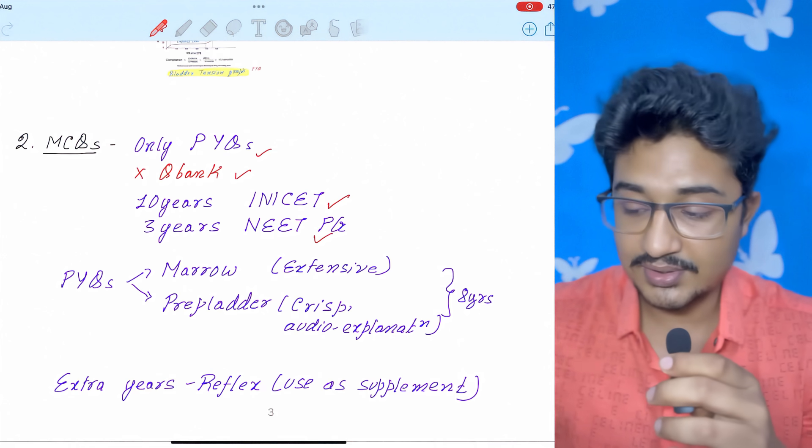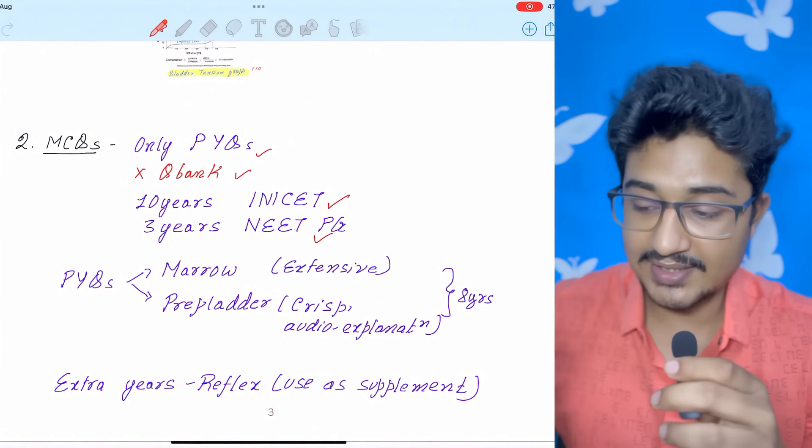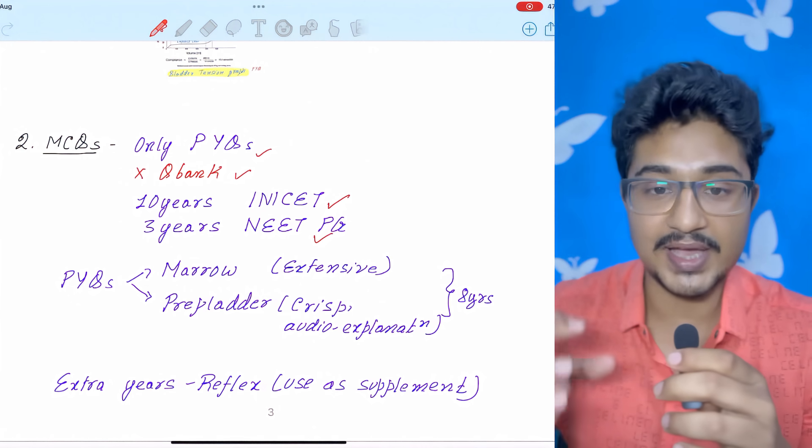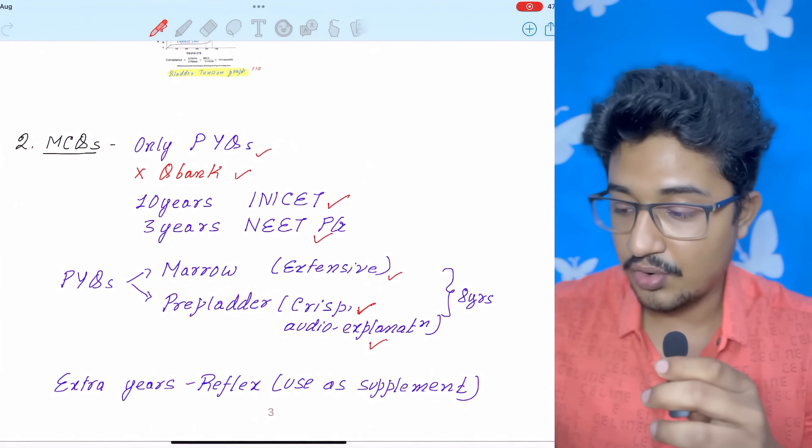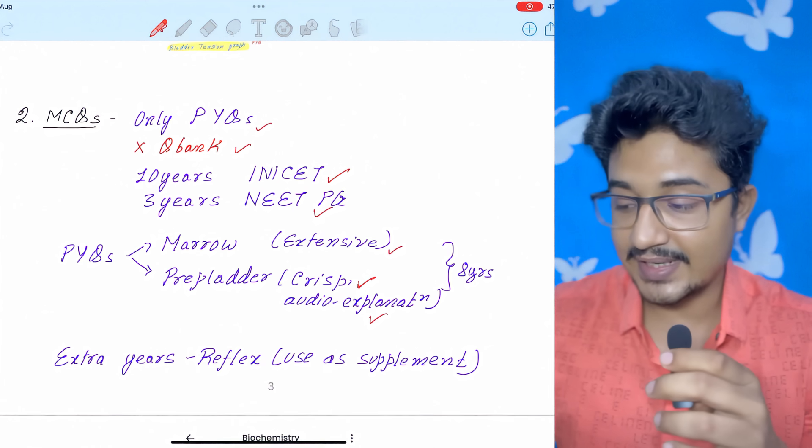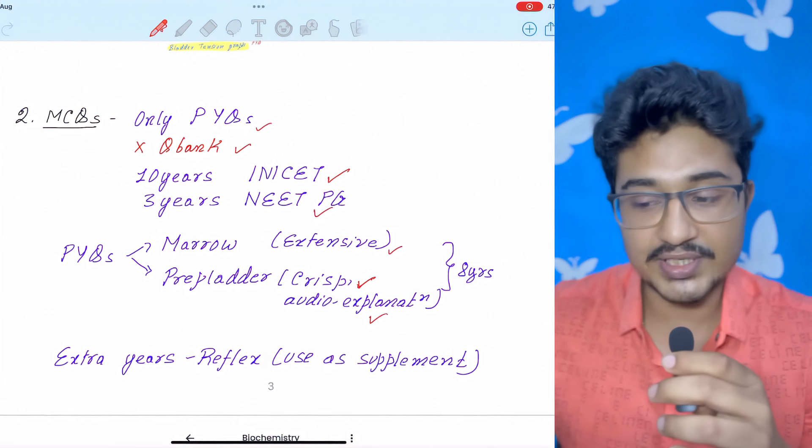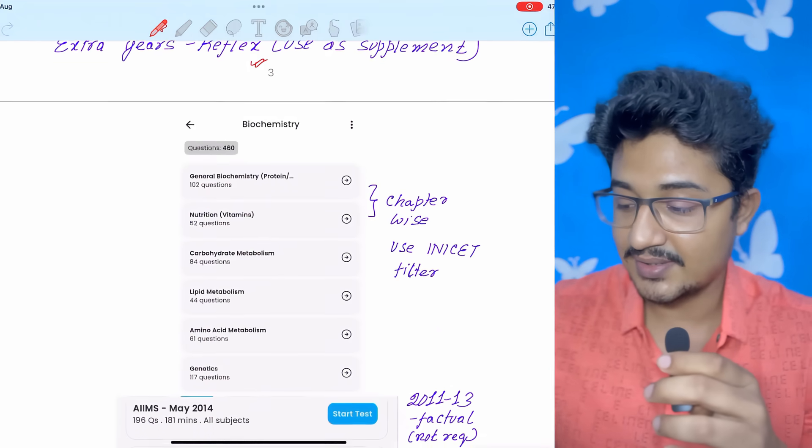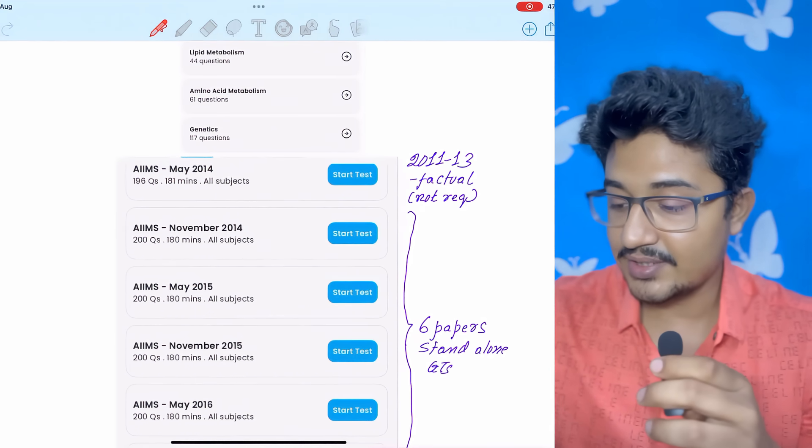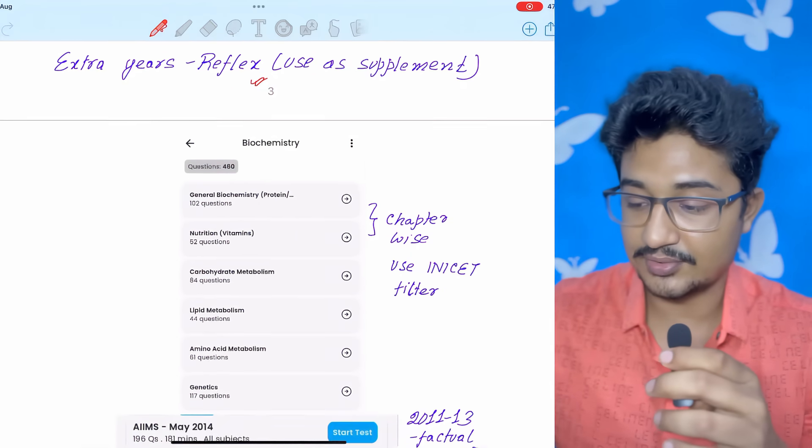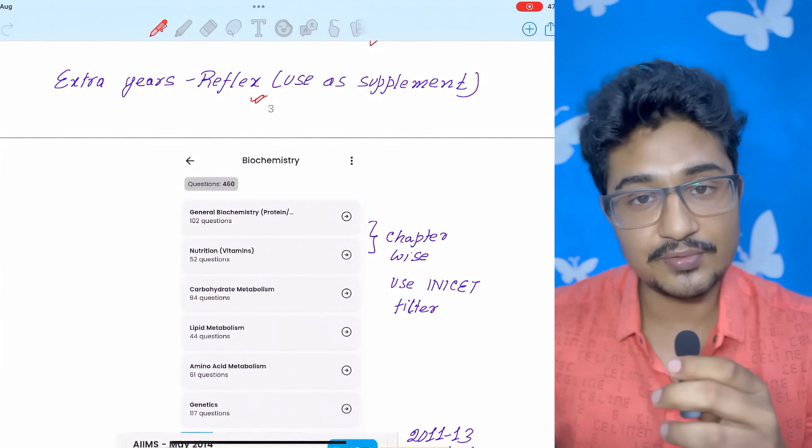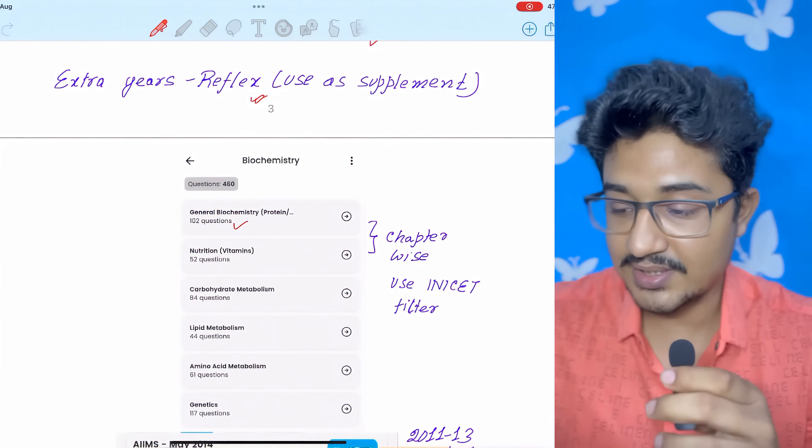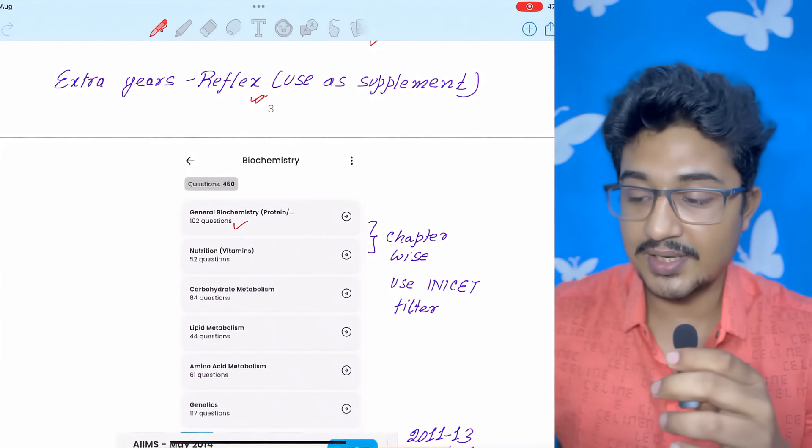For previous year questions also, the app which you are having either Marrow or Prep Ladder, these two are good QBank apps. For Marrow, the explanation is extensive and very much good. For Prep Ladder, it has crisp explanation and audio explanation also, but you will get eight years. So you can supplement more two years from Reflex because Reflex has this 2014 to 2016 AIMS papers also. One thing you can do while using Reflex is that it is arranged in chapter-wise sequence. So if you consider general biochemistry which is in the beginning, then you can use those MCQs. Then you can use nutrition and vitamins, which is a very important topic.